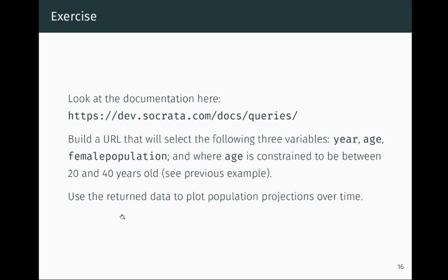Here's a quick exercise — feel free to pause and take as much time as you need. Look at the API documentation and build a URL that selects only three variables — year, age, and female population — instead of all nine. Keep the previous WHERE clause constraining age between 20 and 40. Once you have the data frame, use it to plot population projections over time, with year on the x-axis and female population on the y-axis.